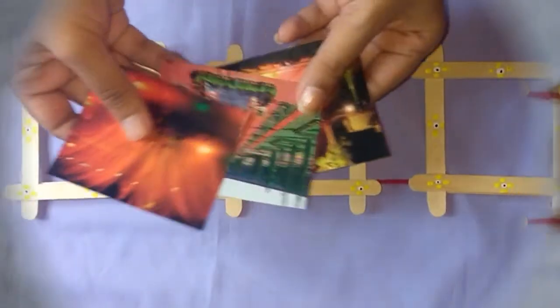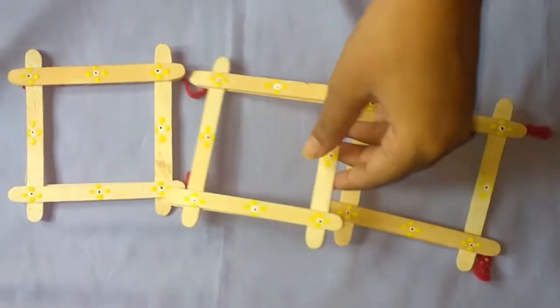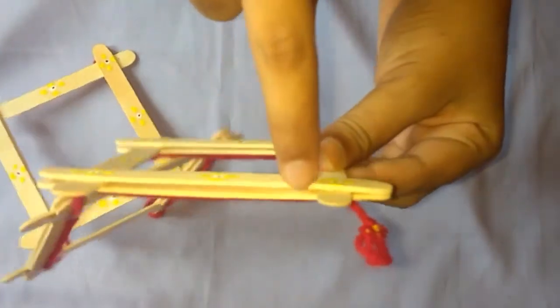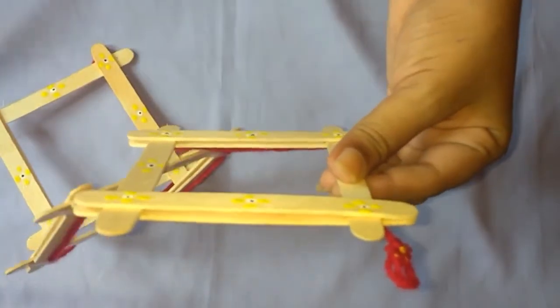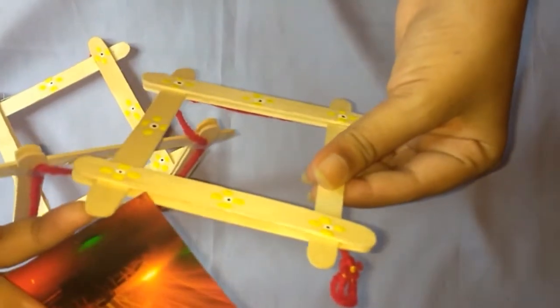The last part is to put in the photos onto your frame. Slit the photo into this slit that we had created from one end.